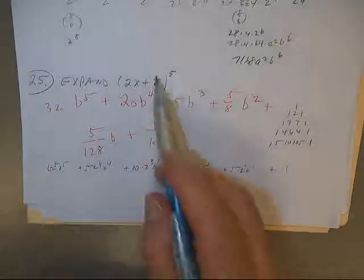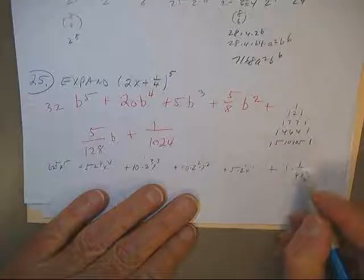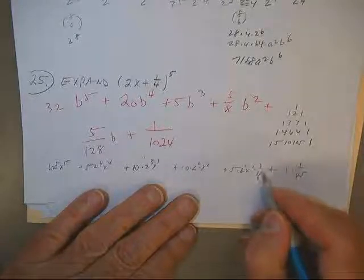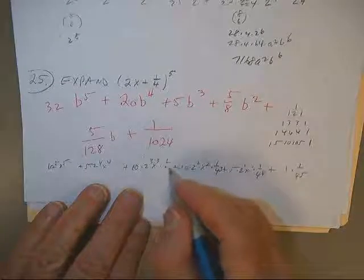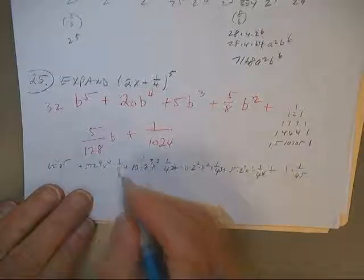And then start at the back, 1 over 4 to the fifth. This is 1 over 4 to the fifth, 1 over 4 to the fourth, 1 over 4 to the third, 1 over 4 squared, 1 over 4 to the first.